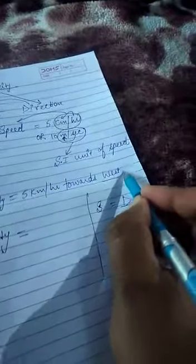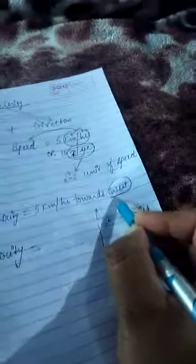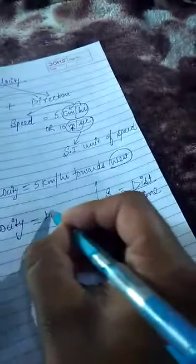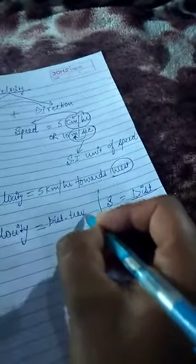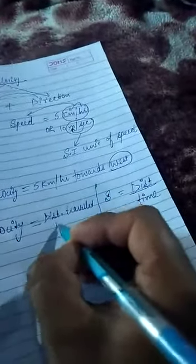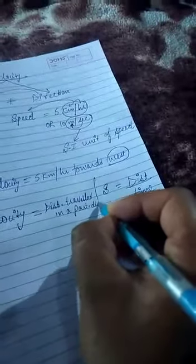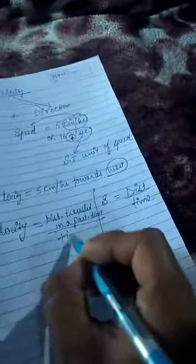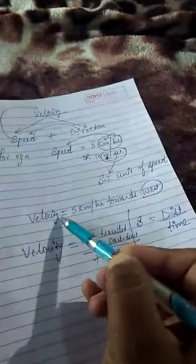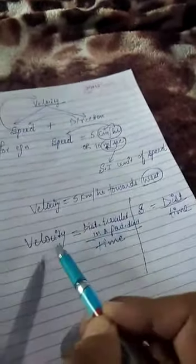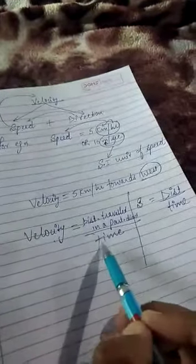Velocity has a particular direction, so can I write that it is the distance traveled in a particular direction per unit time taken? We want velocity with direction, and we can't give direction to time.